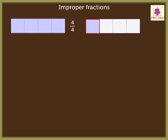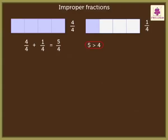In the second grid, she coloured one part of the grid out of four, that is, one-fourth. To find the total coloured parts, we add the fractions. As the denominators are the same, we add the numerators and get the answer as five upon four.